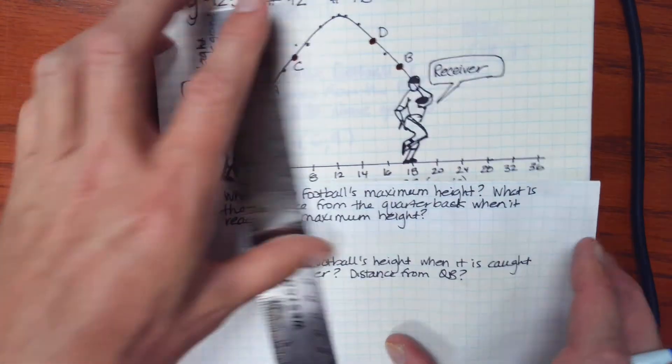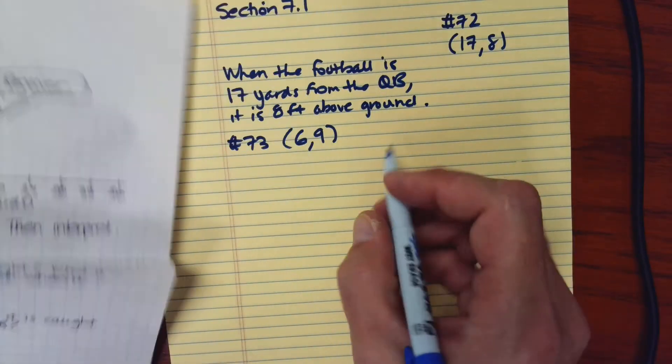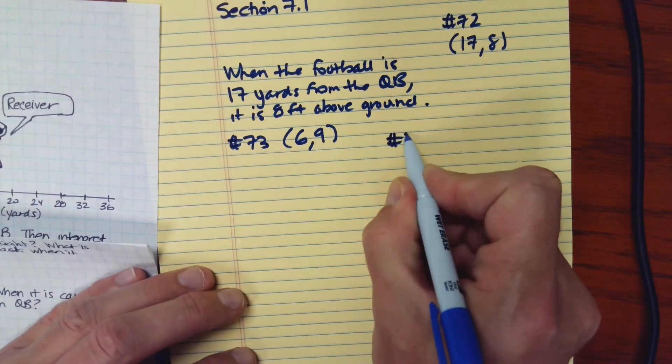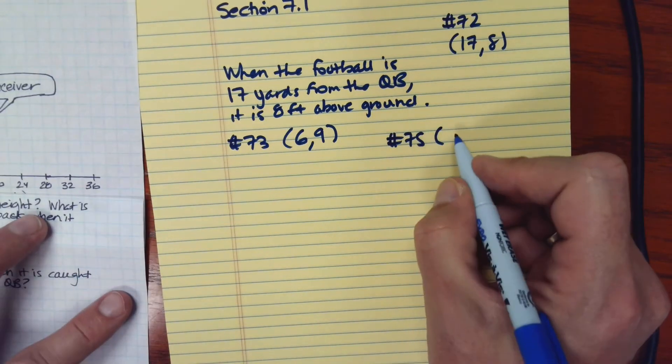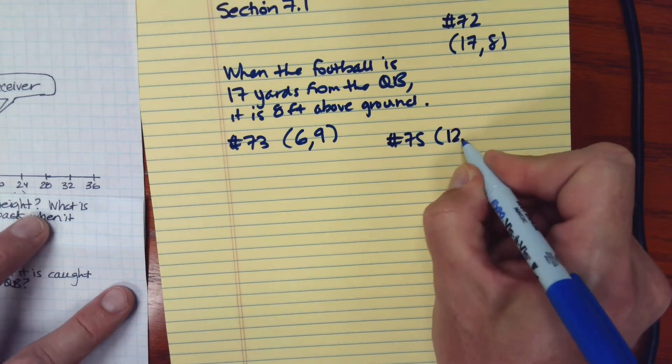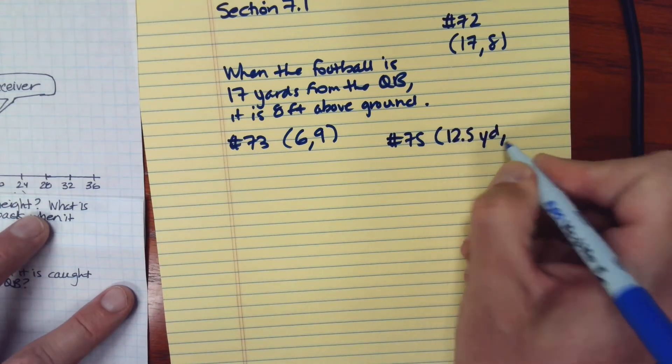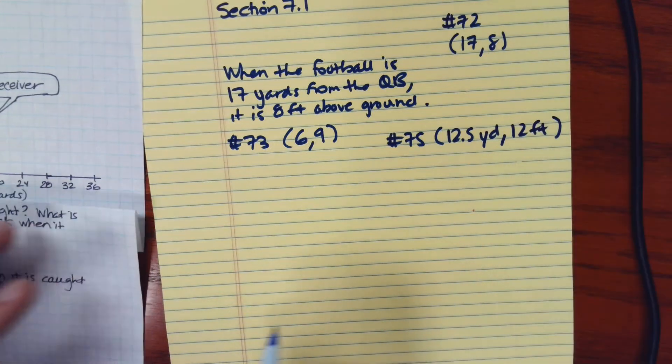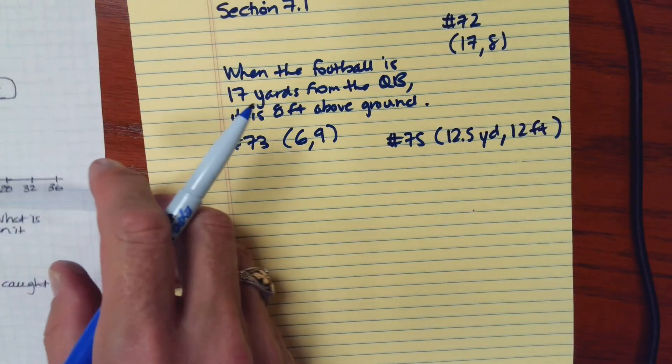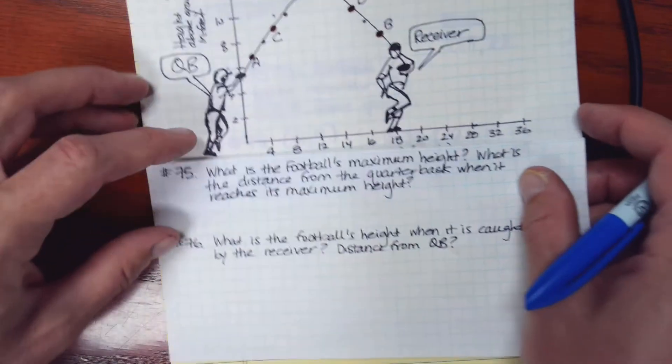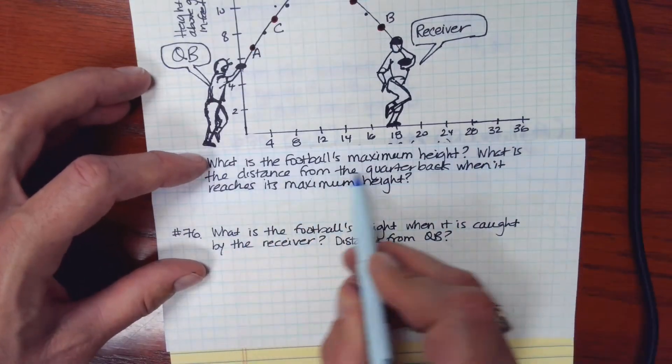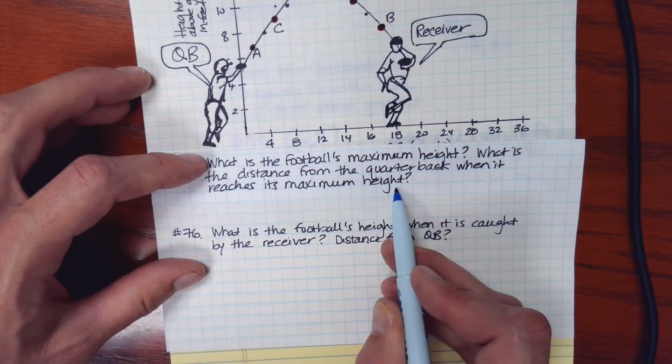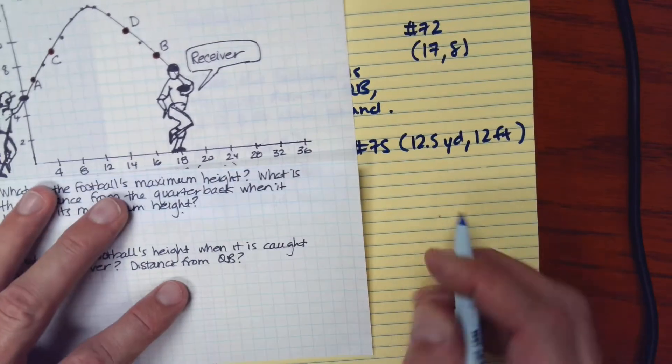So in response to number 75, I would say 12.5 yards and 12 feet. That answers, what is the distance from the quarterback when it reaches its maximum height? 12 and a half yards.